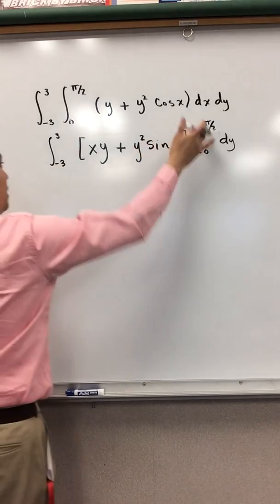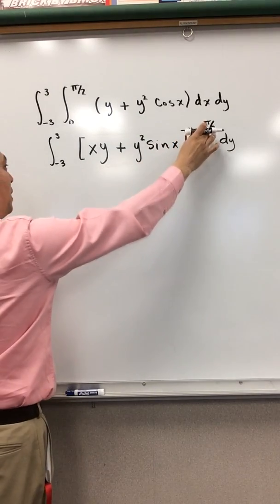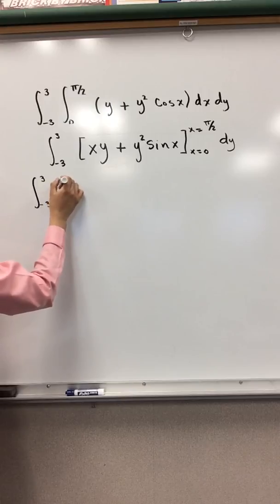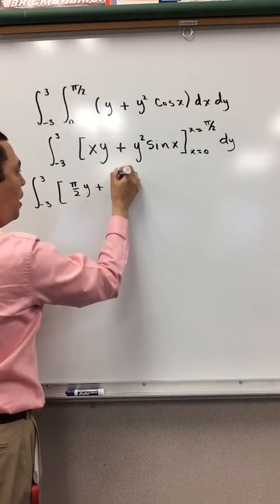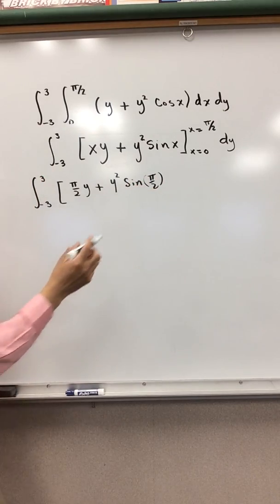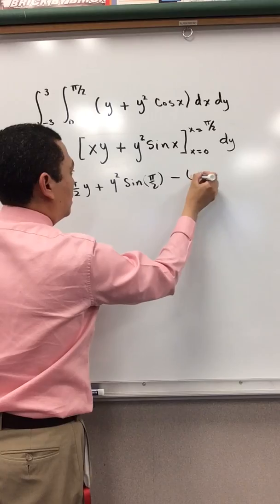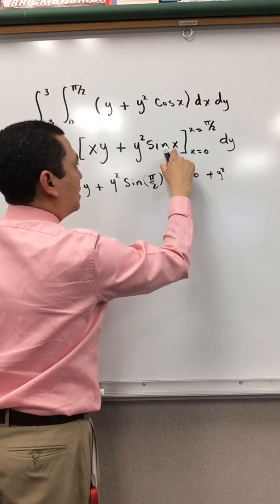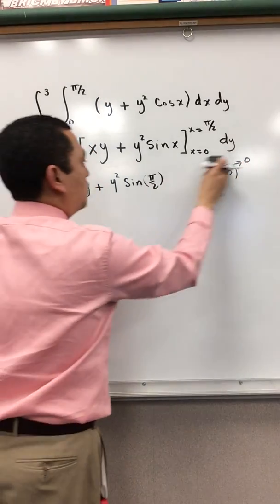Let's evaluate these integration limits. According to the Fundamental Theorem of Calculus, we do upper limit minus lower limit. So we have the integral from negative 3 to 3 of: (π/2)·y + y² sin(π/2). Now look at the lower limit: 0·y is 0, plus y² sin(0) is 0. So the entire lower limit expression equals 0, which I won't write out to save space.